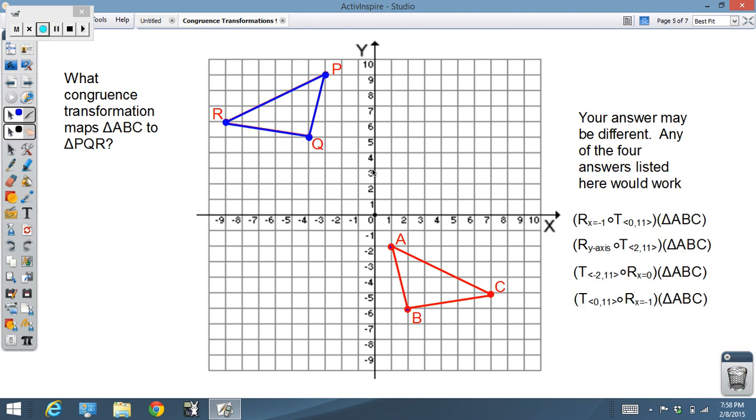Any one of these answers, in fact, may work. I could do a translation over, move it down 11 so that it aligns up right there, and then do a reflection along the line of x equals negative one, which is this one right here. Mark that, reflection over this line. So, translate, reflect.